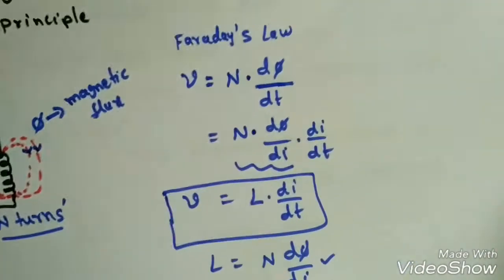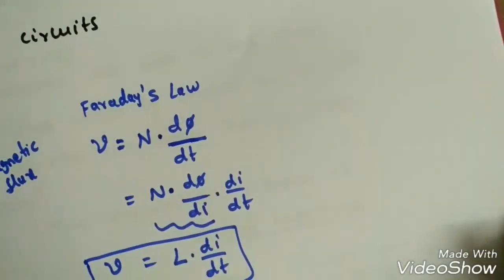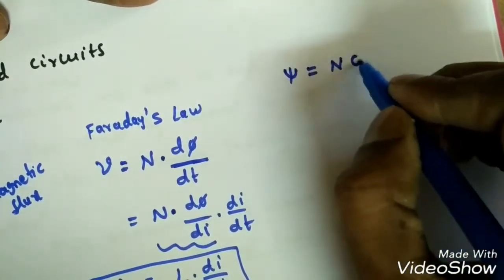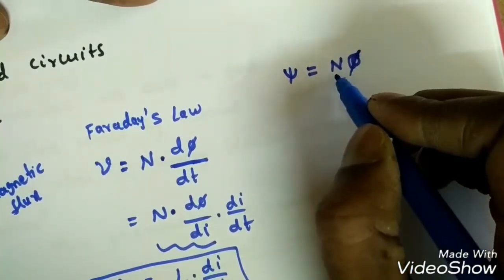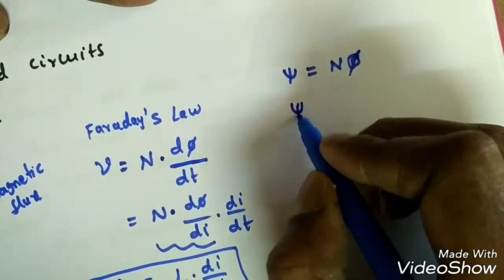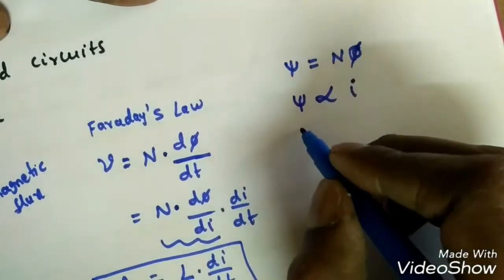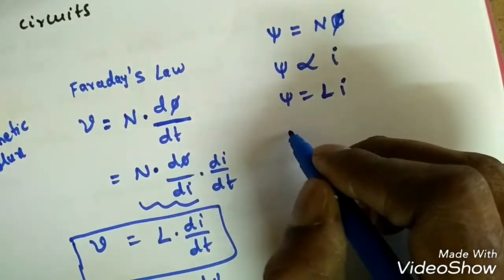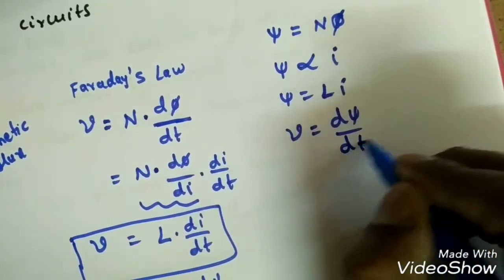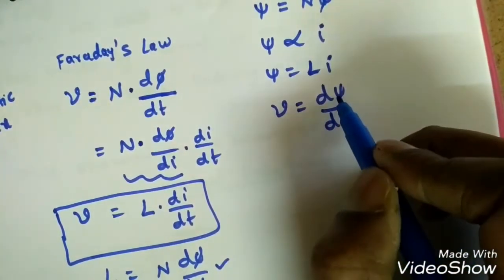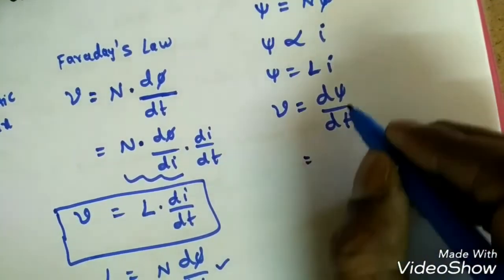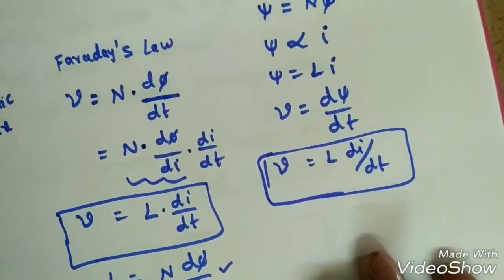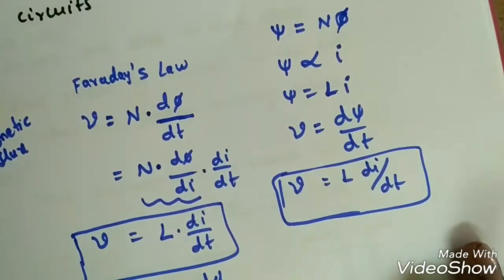We can express this relation another way. The total flux linkage ψ = N · Φ, and since ψ is proportional to current i, we write ψ = L · i, where L is the proportionality constant. The induced voltage is then v = dψ/dt = L · di/dt.